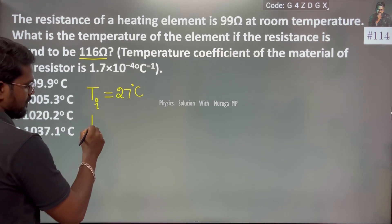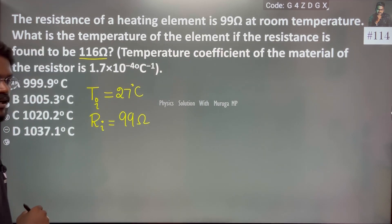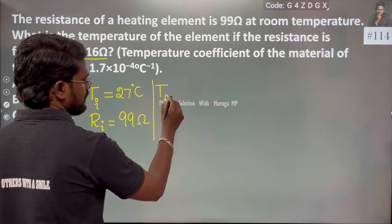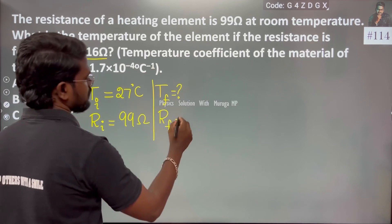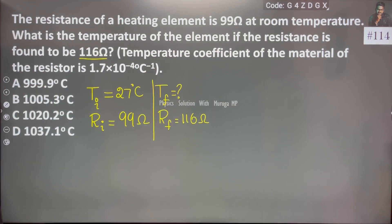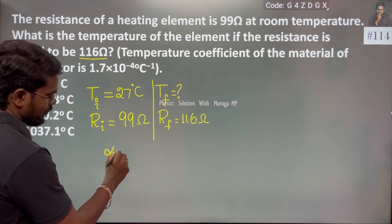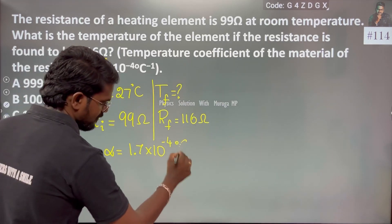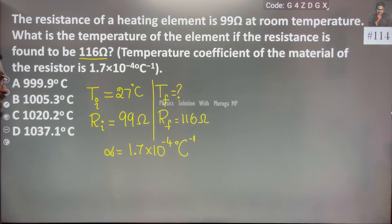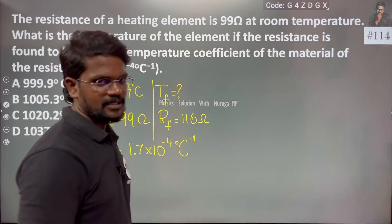The initial resistance Ri is 99 ohm. The temperature coefficient of the material of the resistor, alpha, is 1.7 into 10 to the power minus 4 per degree Celsius. This is the given data for the temperature dependence on resistance.